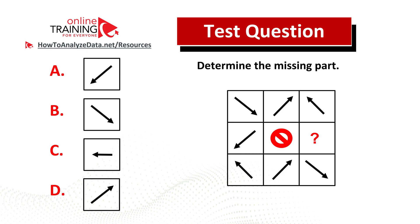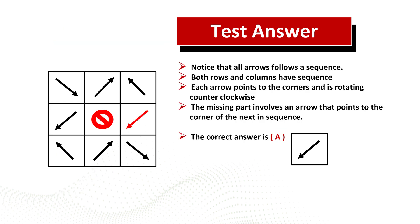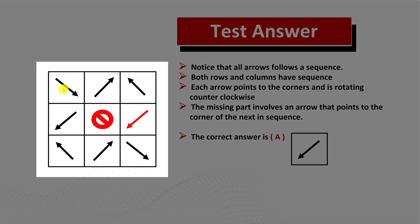Did you determine the missing part? Let's continue to see if we can solve this challenge and get to the correct solution together. To determine the next item in the sequence, we have to look for the patterns. Both rows and columns have a sequence. If you look at the bottom row, you see that the arrow points in the bottom right corner, then in the upper right corner, then in the upper left corner — it rotates counterclockwise. You see that the arrow goes from pointing to the upper left corner, then to the upper right corner, and then to the bottom right corner — it rotates clockwise.